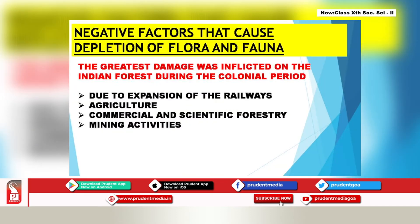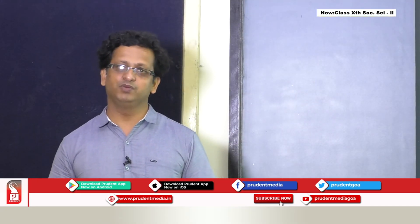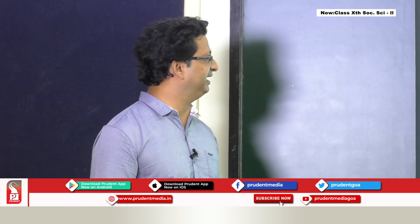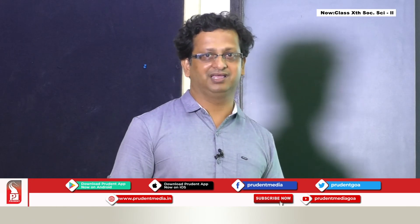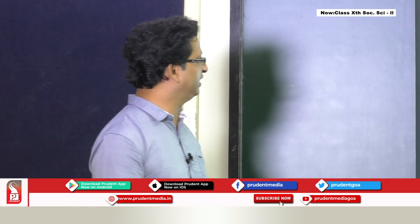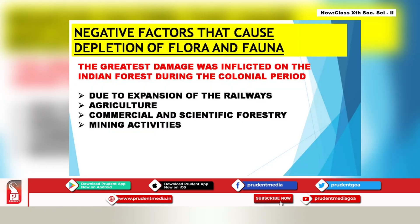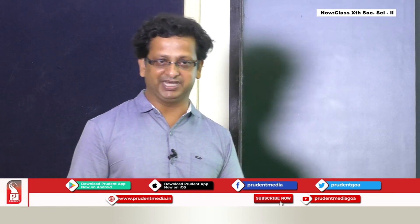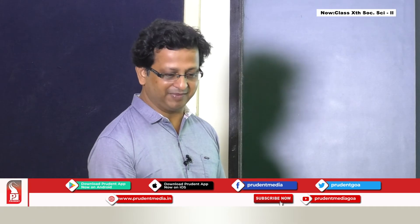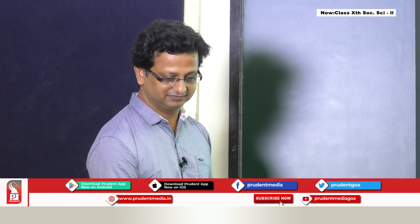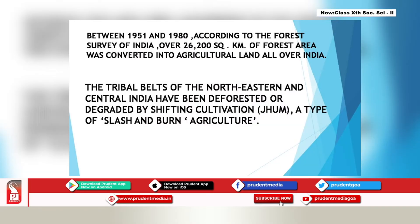The greatest damage to Indian forests was inflicted during the colonial period — when we were ruled by the British. During this period there was a lot of damage done to the flora and fauna, due to expansion of railways, expansion of agriculture, commercial and scientific forestry, and also due to mining activities carried out during that period.